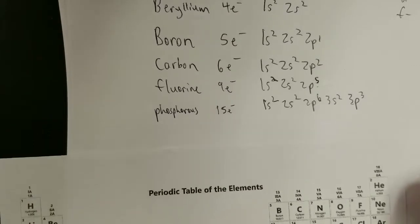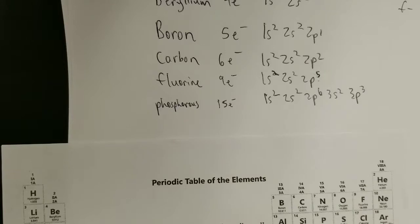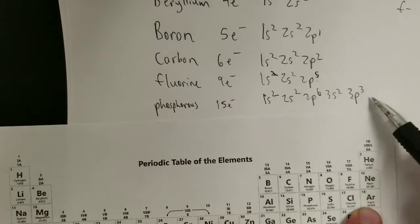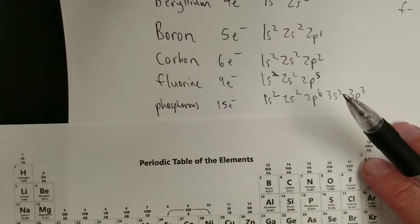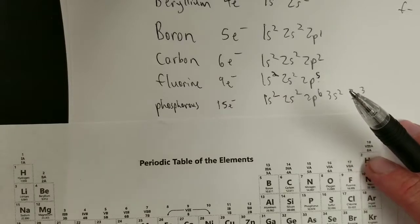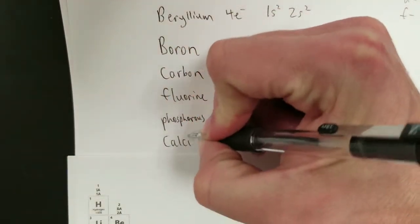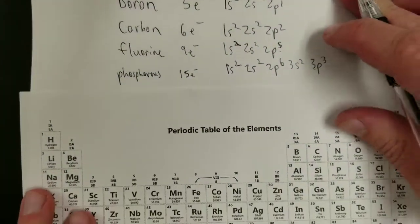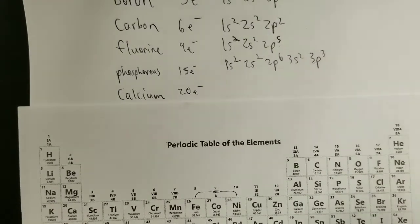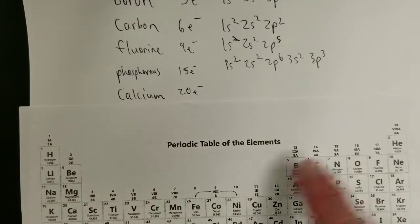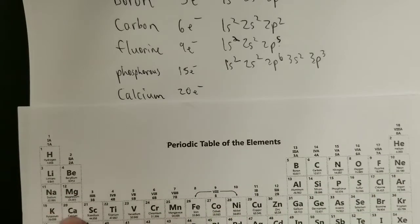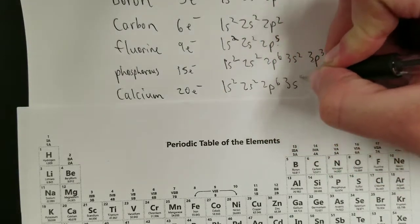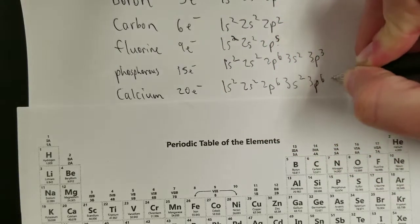For argon, you'd get the same thing except 3p6 instead of 3p3. What about calcium, with its 20 electrons? Same process: 1s2, 2s2, 2p6, 3s2, 3p6, 4s2.